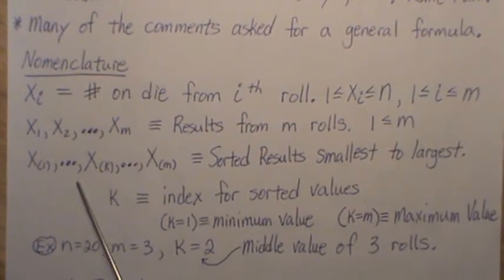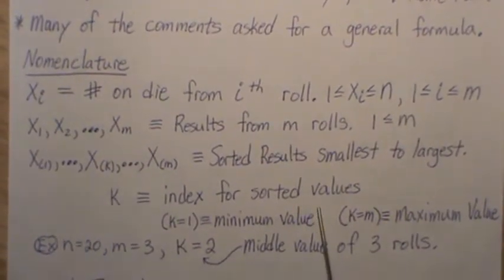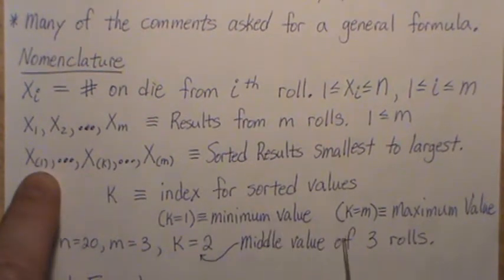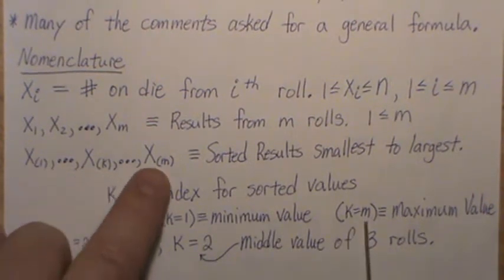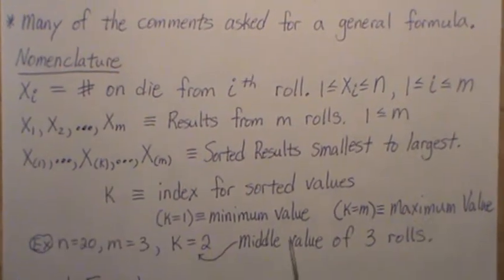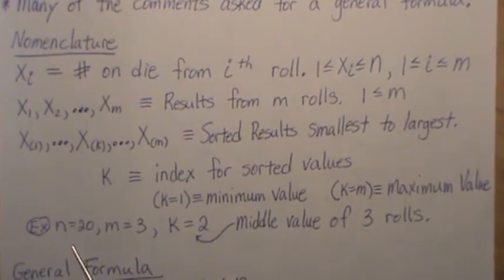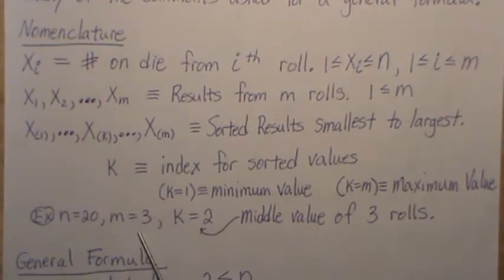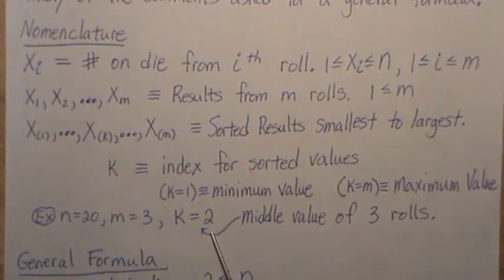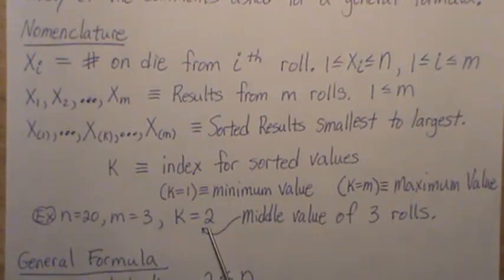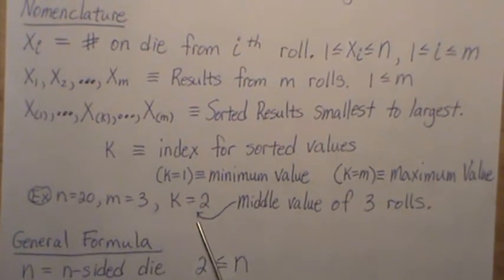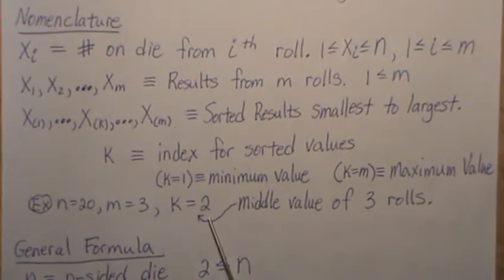So these represent the sorted results from smallest to largest. And k is the index that we're going to use in parentheses for these sorted values. So k equals 1, that's the minimum. If k equals m, that's the largest. And so as a very quick example, if we have n equals 20, so it's a 20-sided die, we're rolling it three times, and we're looking at the second sorted value, so that's the middle value. So if you sort them, one, two, three, two represents that middle value, or the middle roll.